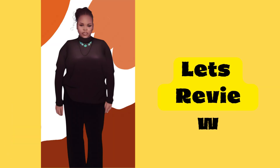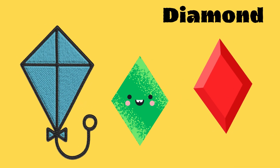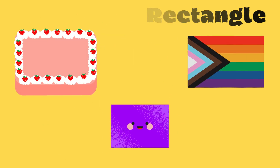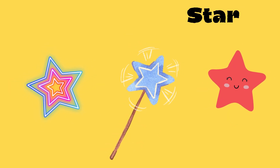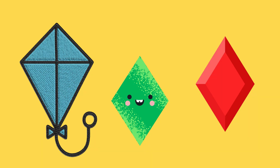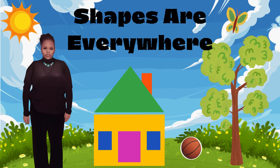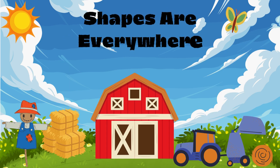Hello friends! Time to review. What shapes do you remember we talked about? Diamonds — we talked about. Rectangles — we talked about. Hearts — we talked about. Stars — we talked about. Ovals — we talked about. And squares — we talked about. Remember friends, shapes are everywhere.